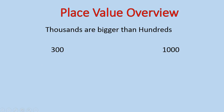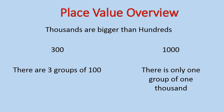So the thousands are bigger than hundreds. Although this one has three groups of 100, there is only one group of thousands, even though the number one is smaller than the number three. We would say 300 is less than 1,000. There is three groups of 100 versus one group of 1,000, but it's a bigger amount.